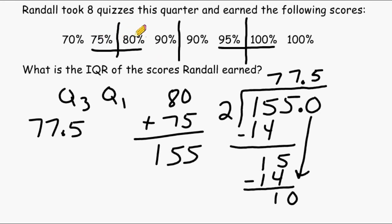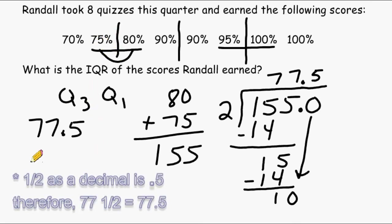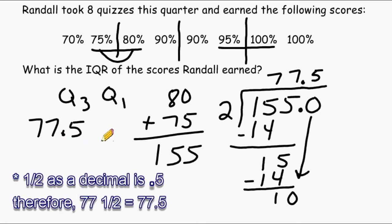There's another way we could have figured out the middle of these two numbers. Notice that 75 and 80 are just five apart, so the distance from 75 to 80 is five. Half of that distance is two and a half, so if we add two and a half to 75, that gives us 77.5 — the same answer.